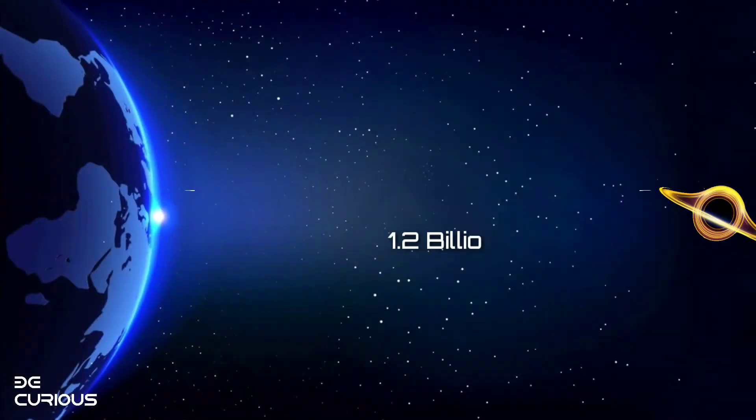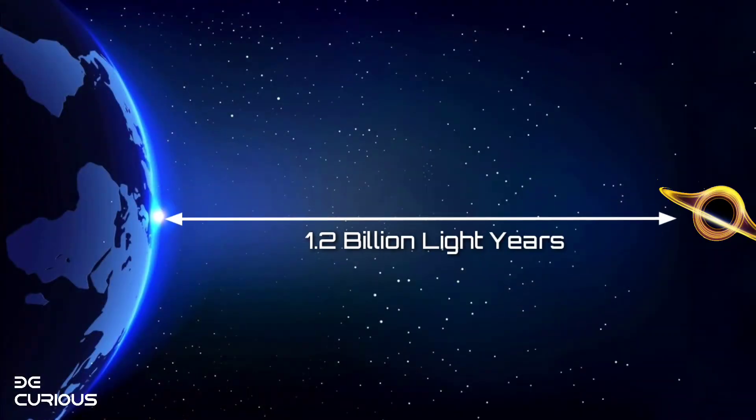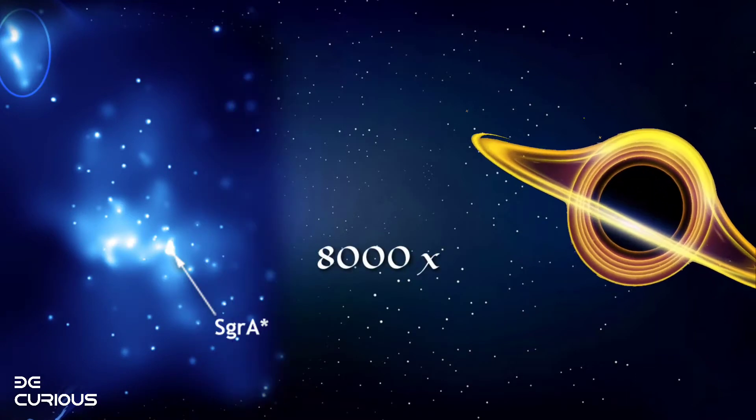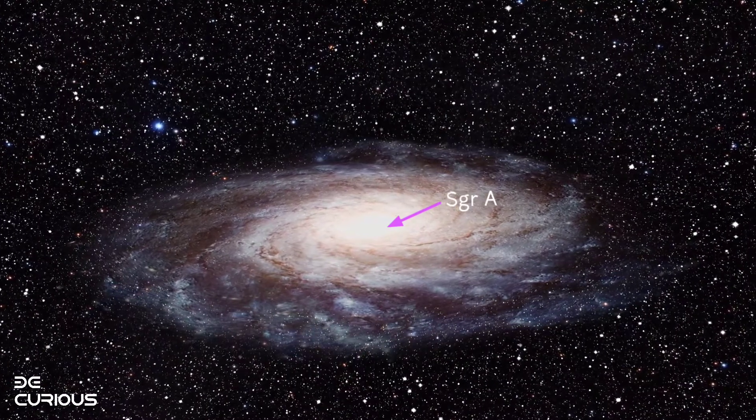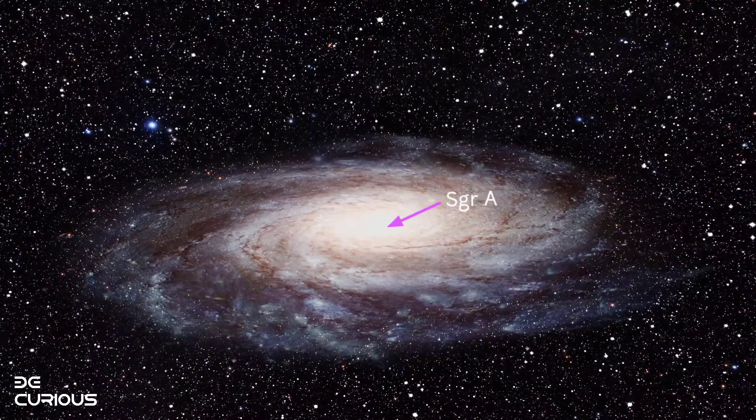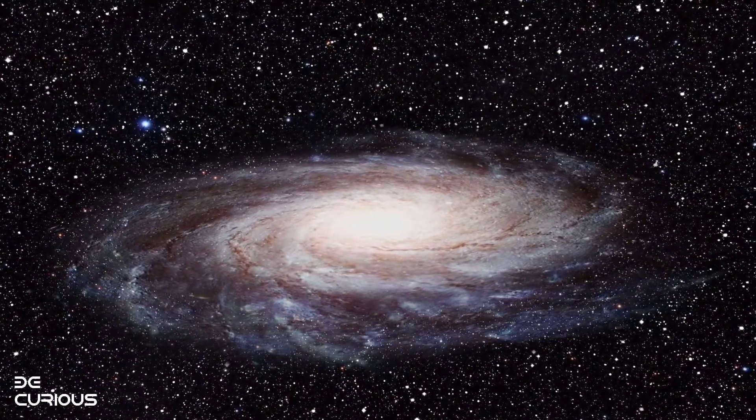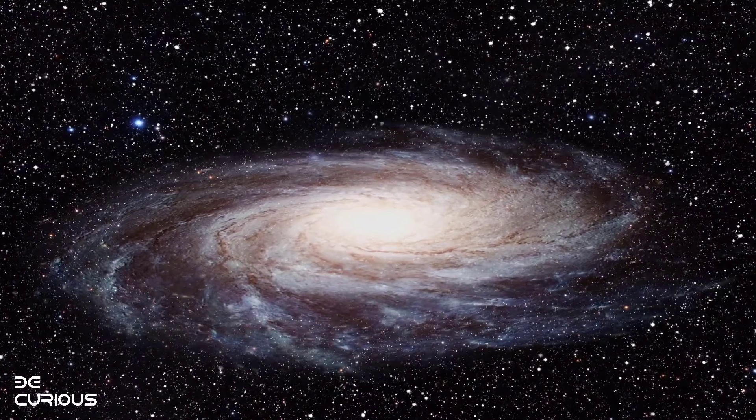The black hole is 1.2 billion light-years away from Earth and 8,000 times bigger than the black hole Sagittarius A, which is at the center of the Milky Way. If the Milky Way's black hole wanted to grow that fat, it would have to swallow two-thirds of all the stars in our galaxy.